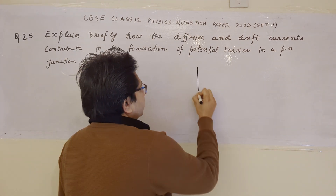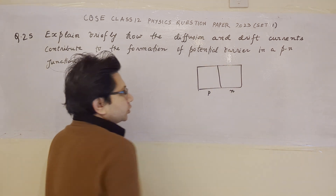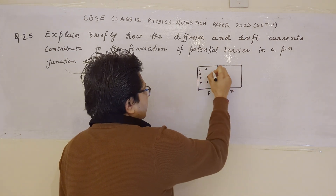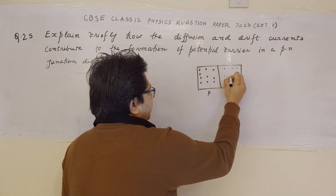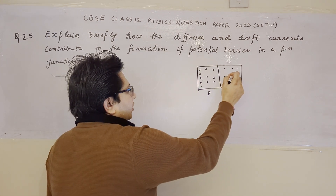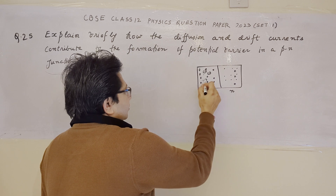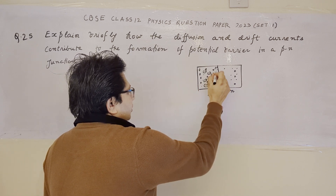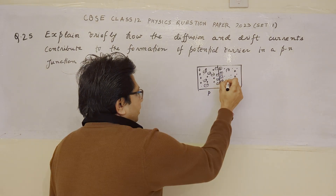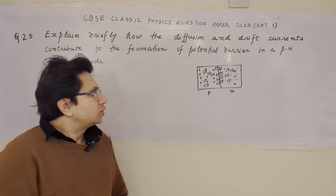A P-N junction diode consists of two different regions. The first one is known as the P-Type region and the second one is known as the N-Type region. In the P-Type region there are majority charge carriers known as holes, and the N-Type consists of majority charge carriers as electrons. The minority charge carriers of the P-side are electrons and the minority charge carriers of the N-side are holes. Ions are of negative type in the P-side region and of positive type in the N-Type region.